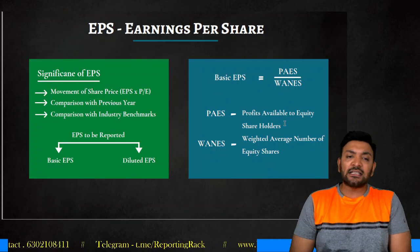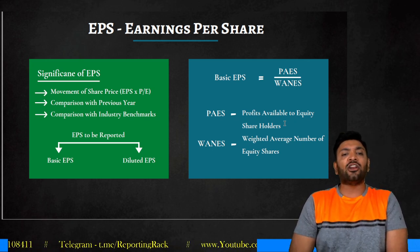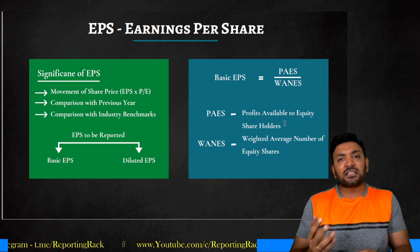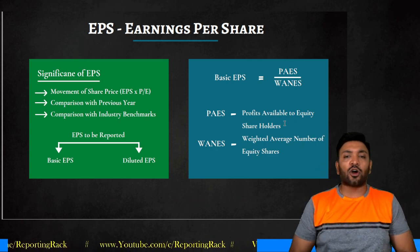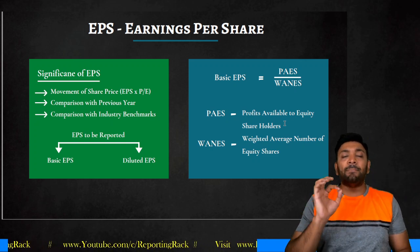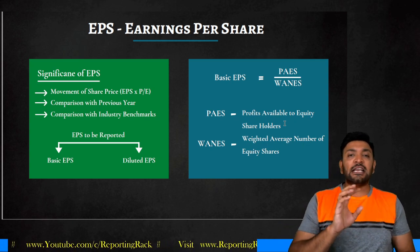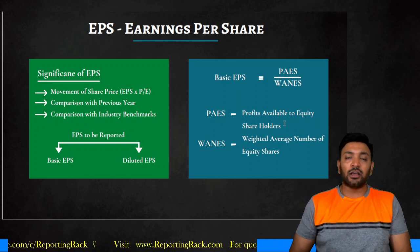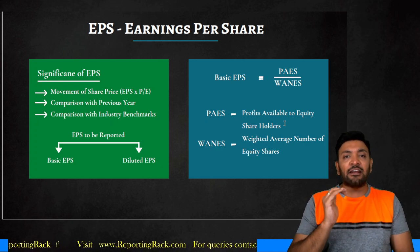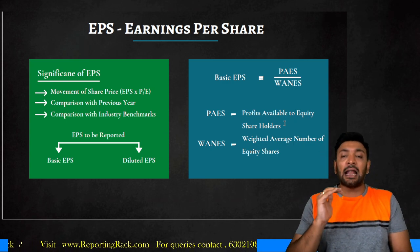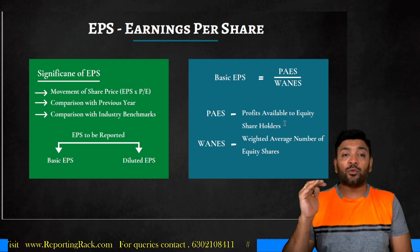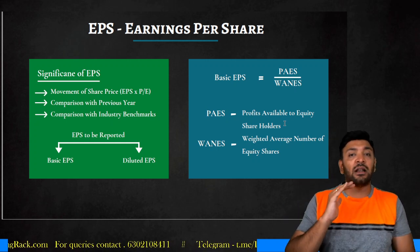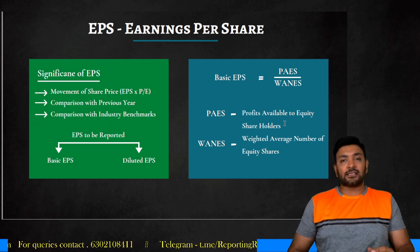The movement of share prices is based on EPS, and comparison with previous year and industry benchmarks is possible only with EPS. EPS is of two parts: Basic EPS and Diluted EPS. Basic EPS — or BEPS — is computed using the formula PAS divided by WNES, which I call 'pays by veins.' PAS stands for Profits Available to Equity Shareholders and WNES stands for Weighted Average Number of Equity Shares.